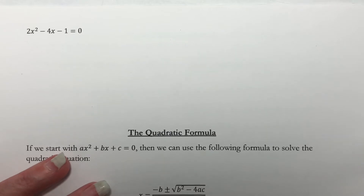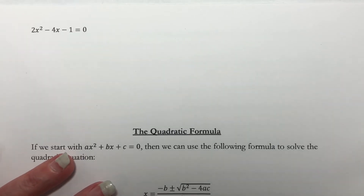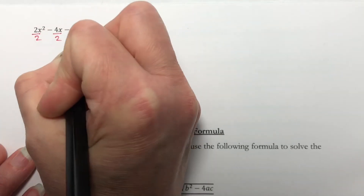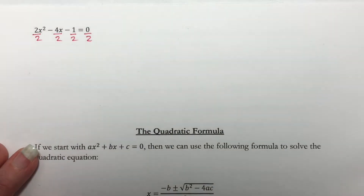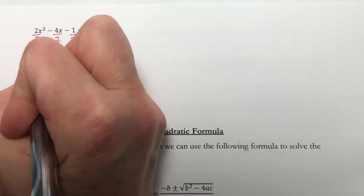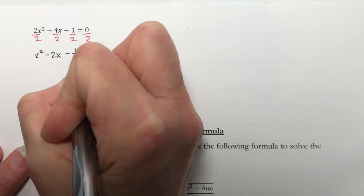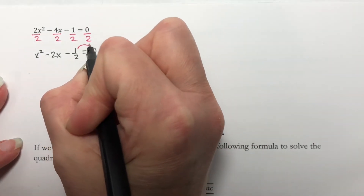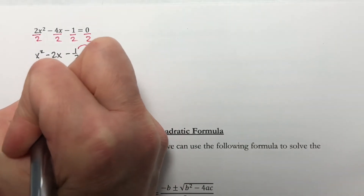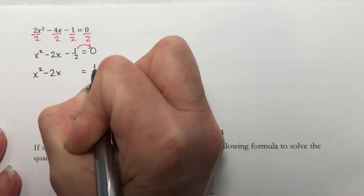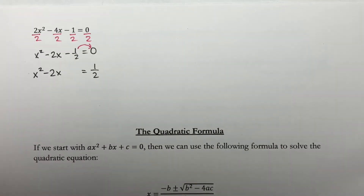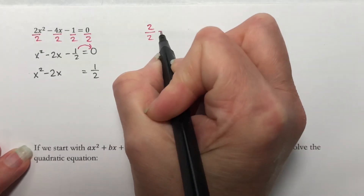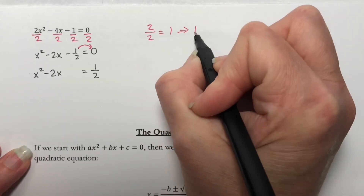So I have 2x squared minus 4x minus 1 is equal to 0. Our first step is to divide everything by a, so I'm going to divide everything by 2. That gives us x squared minus 2x minus one half is equal to 0. Our next step is to get the constant over here, so I'm going to add one half to both sides. I have x squared minus 2x, leaving myself a space to add in that magic number, is equal to one half. So let's find that magic number: take the number in front of x, which is 2, divide it by 2, which gives me 1, and then square it, which gives me 1.